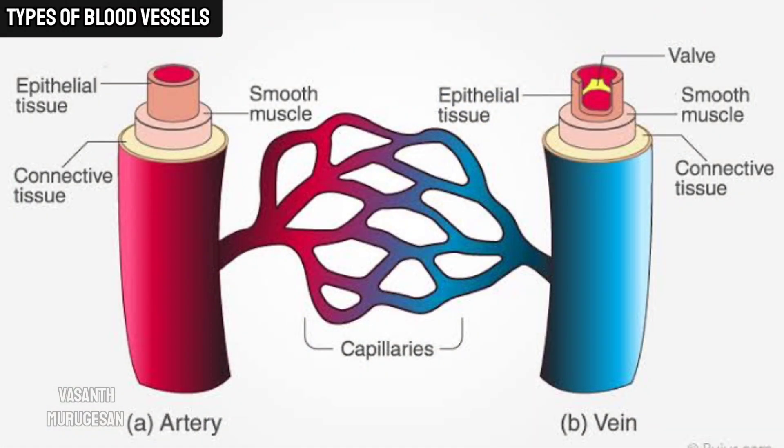Next, veins. As the arteries deliver oxygen to the tissues, the oxygen is reduced in the blood. Then blood transfers to veins. This is where capillaries come into play — the capillary is a blood vessel present in between the artery and the vein.